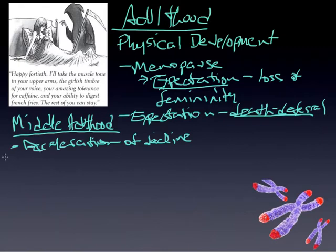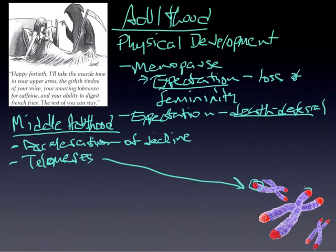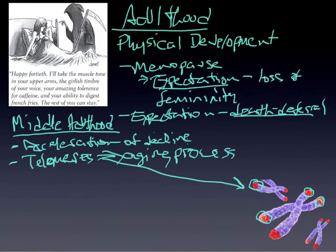One of the contributing factors here is something called telomeres, which are pictured right here. The red that you see is the part of the fraying, a little bit like a shoestring, on these chromosomes, which contributes to the aging process. The telomeres have been identified as part of the aging of cells, the dying off of cells.